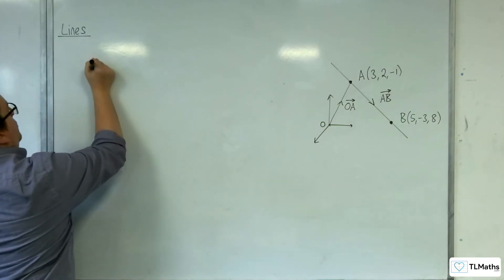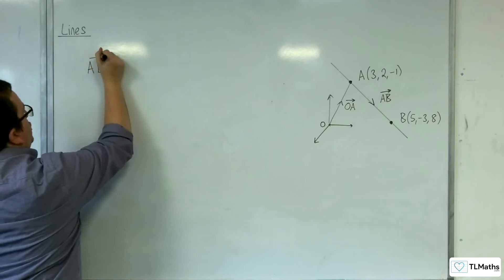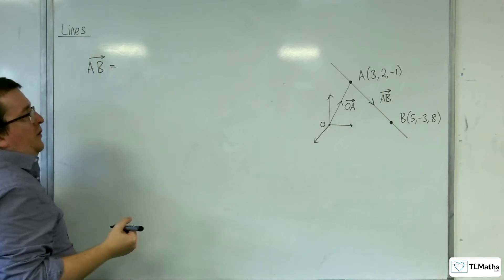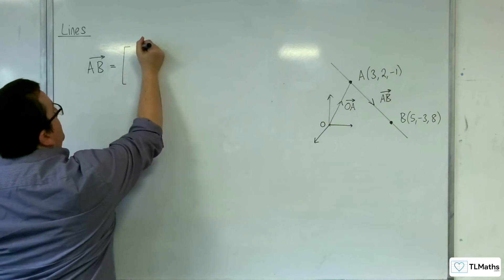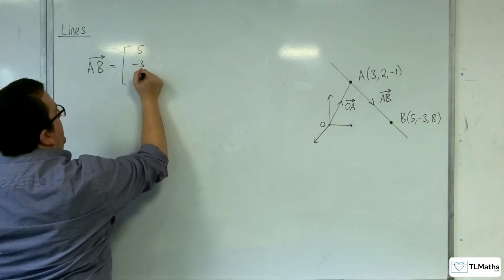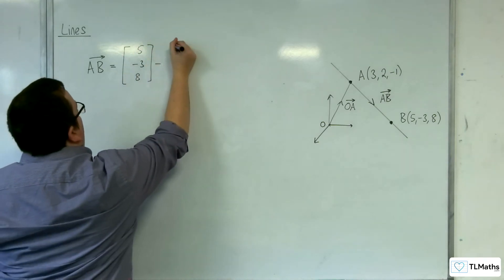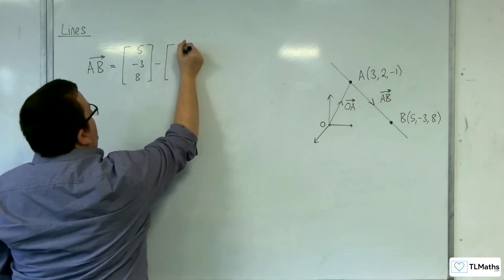So the first thing that you do is you work out the direction vector for the line. So AB, so that will be OB, 5, minus 3, 8, take away OA, which is 3, 2, minus 1.